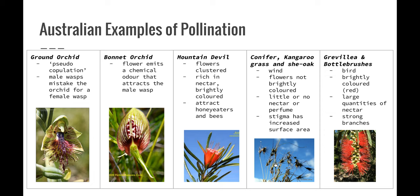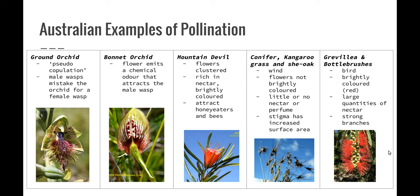The mountain devil produces flowers clustered in an inflorescence that are rich in nectar and brightly coloured, attracting honey eaters and bees whose bodies collect pollen and deposit it on the next plant. Conifers, kangaroo grass, and she-oak are wind-pollinated species. Wind-pollinated plants are generally cone-bearing or produce flowers that are not brightly coloured and contain little or no perfume. The stigma may be feathery to increase surface area for catching pollen, and the stamens often dangle beyond the flower to increase wind exposure. Grevilleas and bottle brushes are bird-pollinated — brightly coloured, often red, as birds see the red spectrum well — producing large quantities of nectar in the morning and little or no odour, as birds have a poor sense of smell.